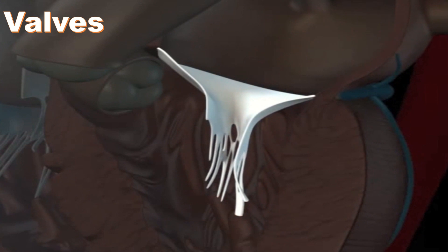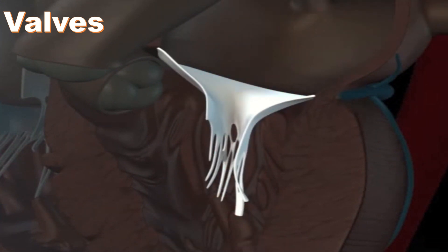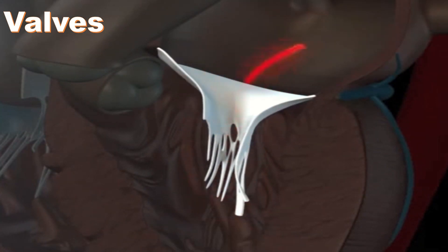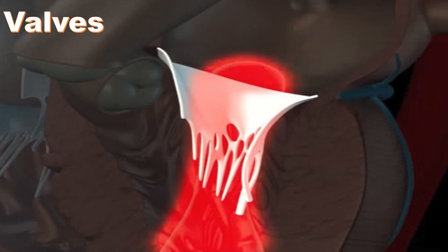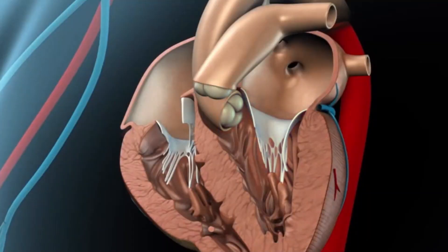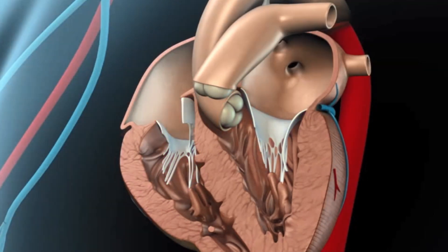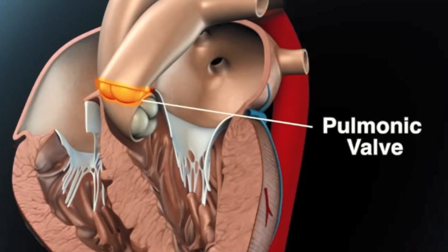There are two valves on each side of the heart. These valves make sure that blood moves forward and not backward, especially between contractions. The valve between the right atrium and right ventricle is called the tricuspid valve. The valve between the right ventricle and the pulmonary artery — the blood vessel taking blood to the lungs — is called the pulmonary valve.